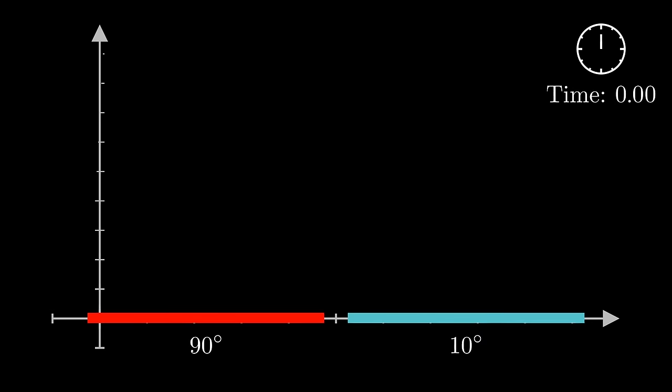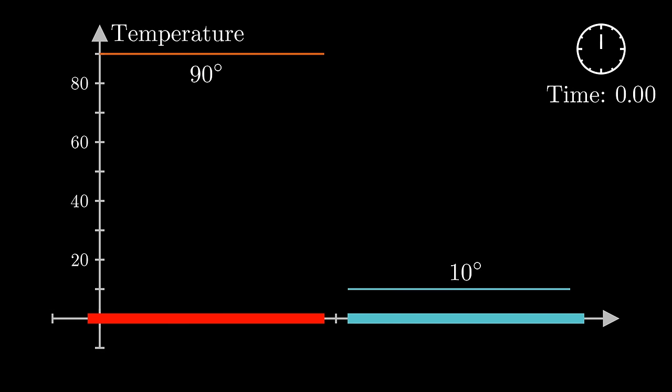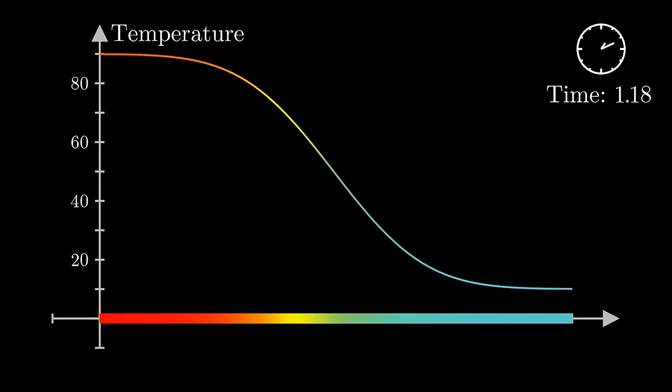To take a concrete one-dimensional example, let's say you have two different rods at different temperatures, where that temperature is uniform along each one. You know that when you bring them into contact, the temperature will flow from the hot one to the cool one.